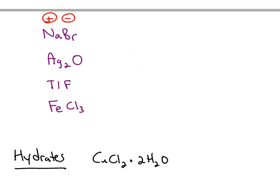Sodium is always a positive 1, so we don't need the Roman numerals. We just write sodium, and then just like before when we were naming molecular compounds, bromine changes to bromide. Here's one with silver and oxygen. Silver is always a positive 1 charge, so it's just silver oxide.